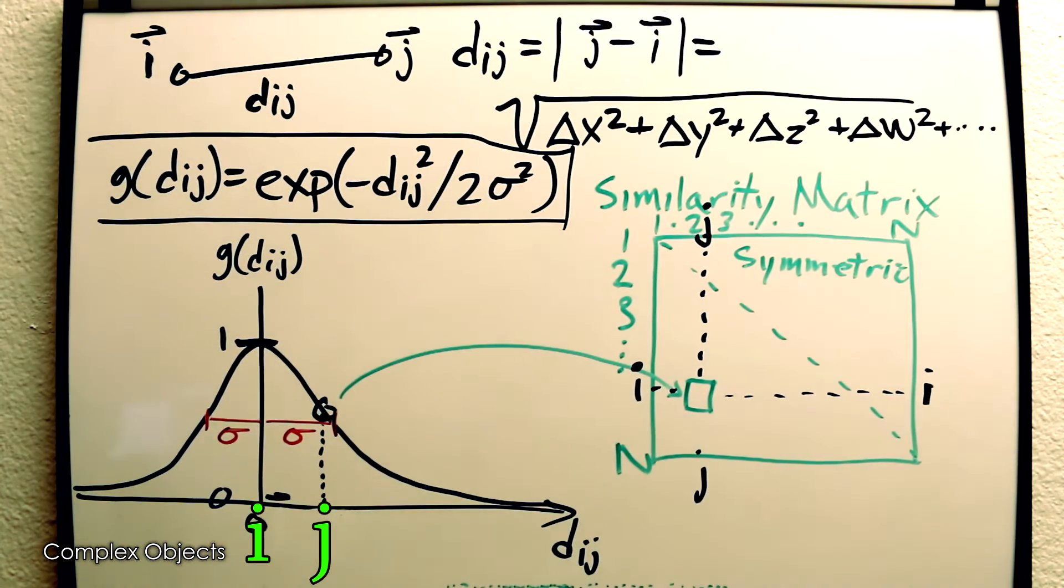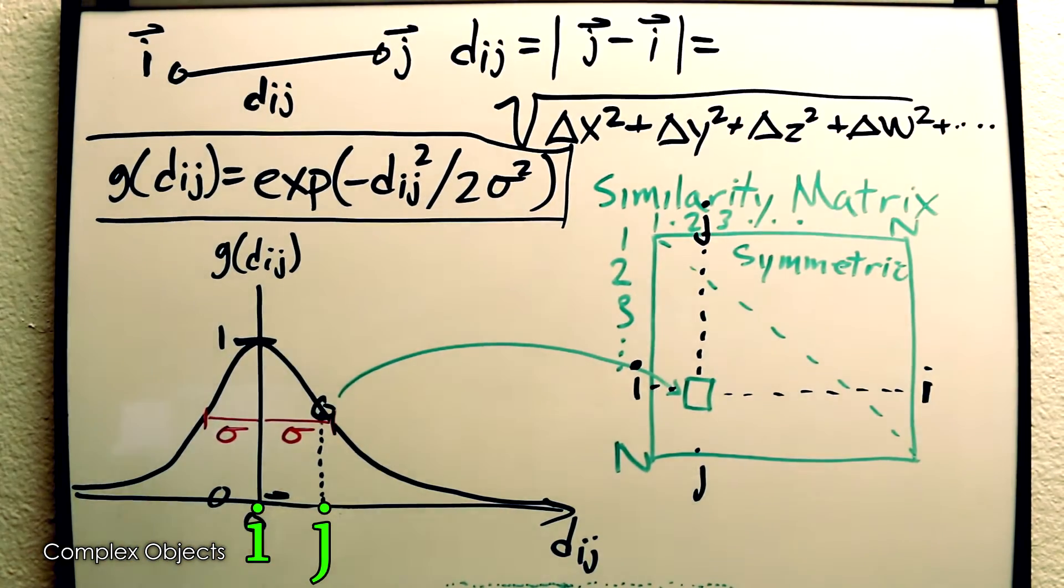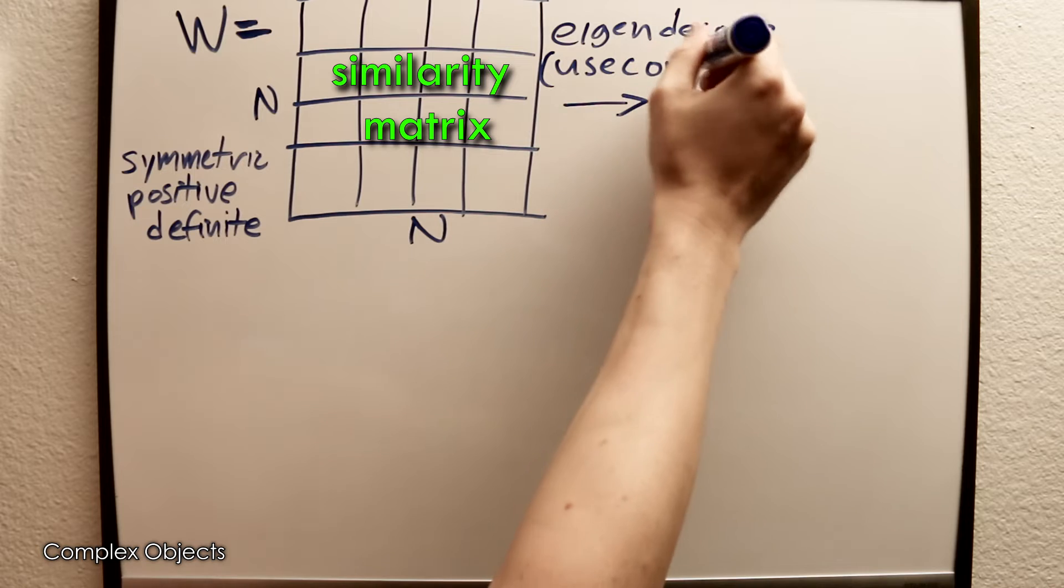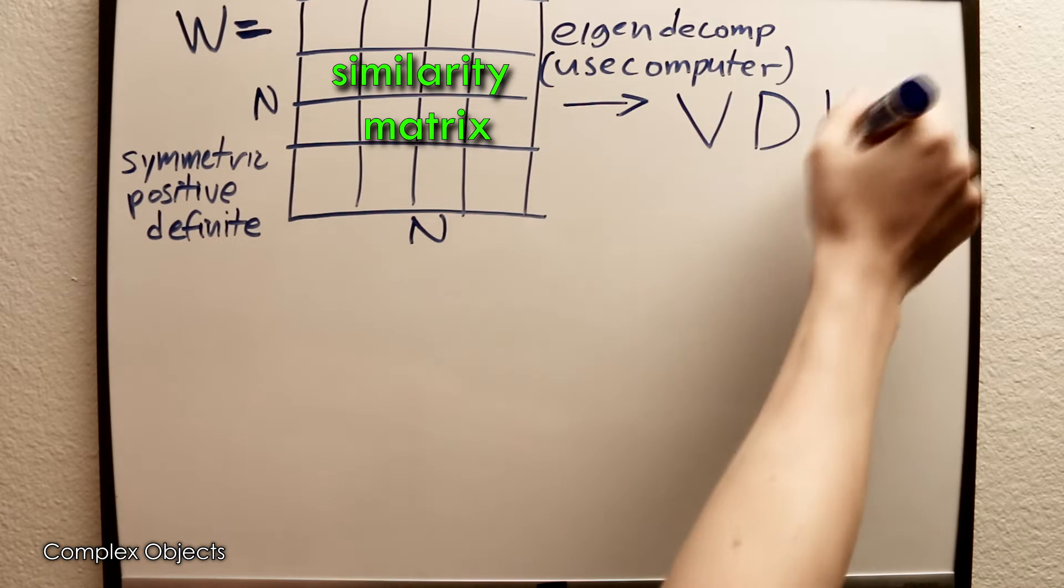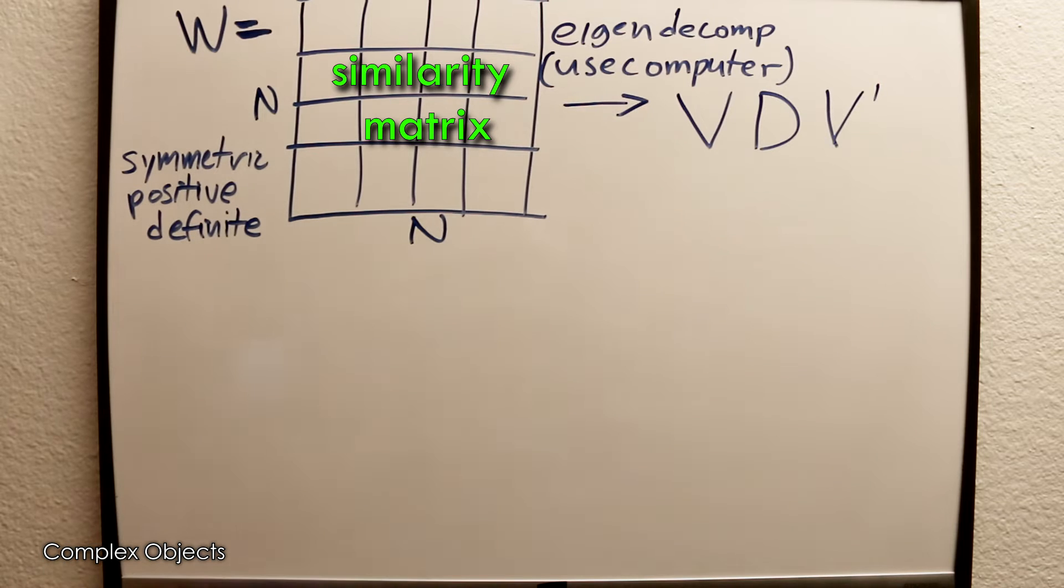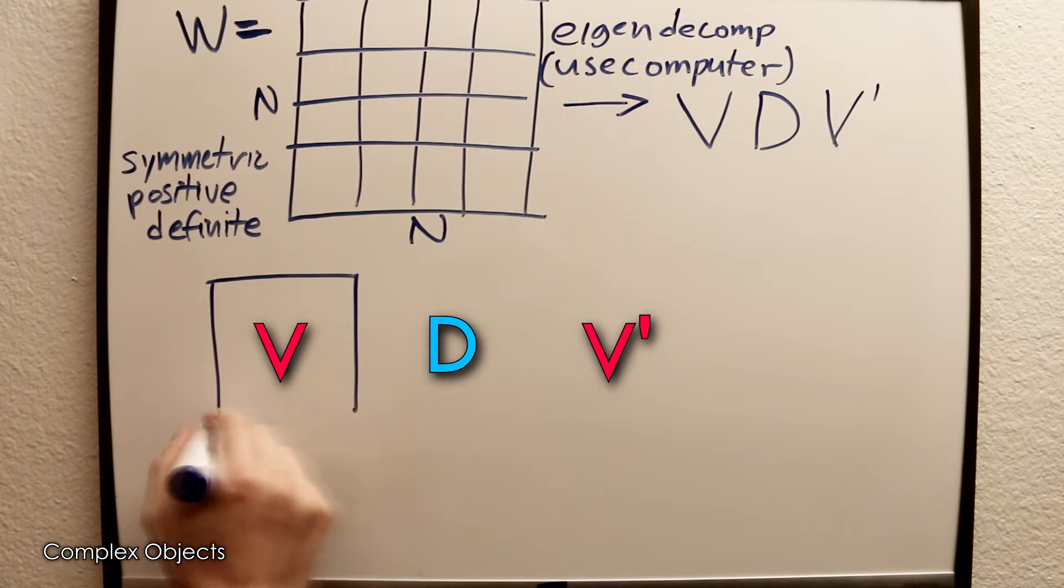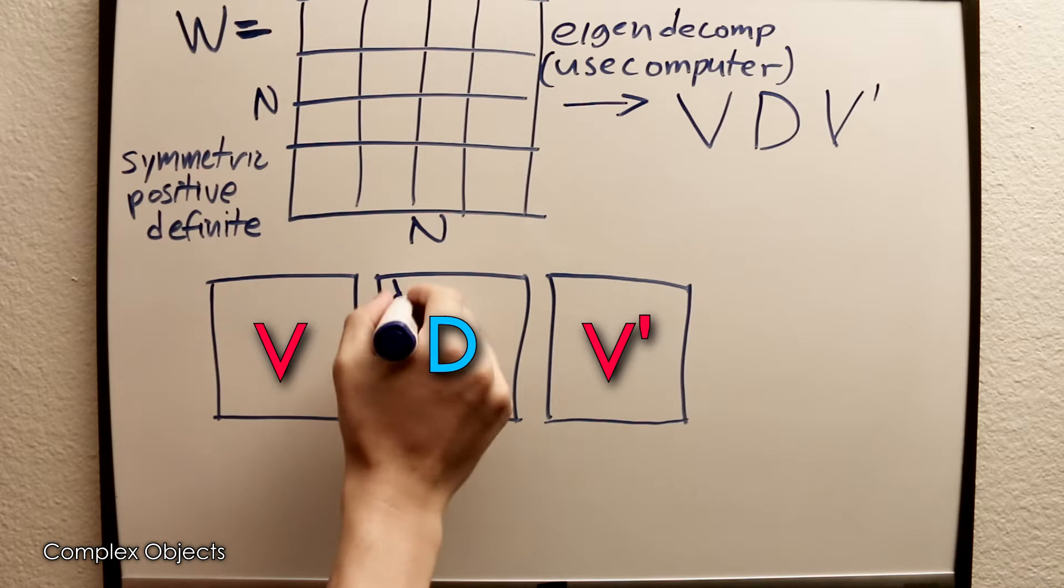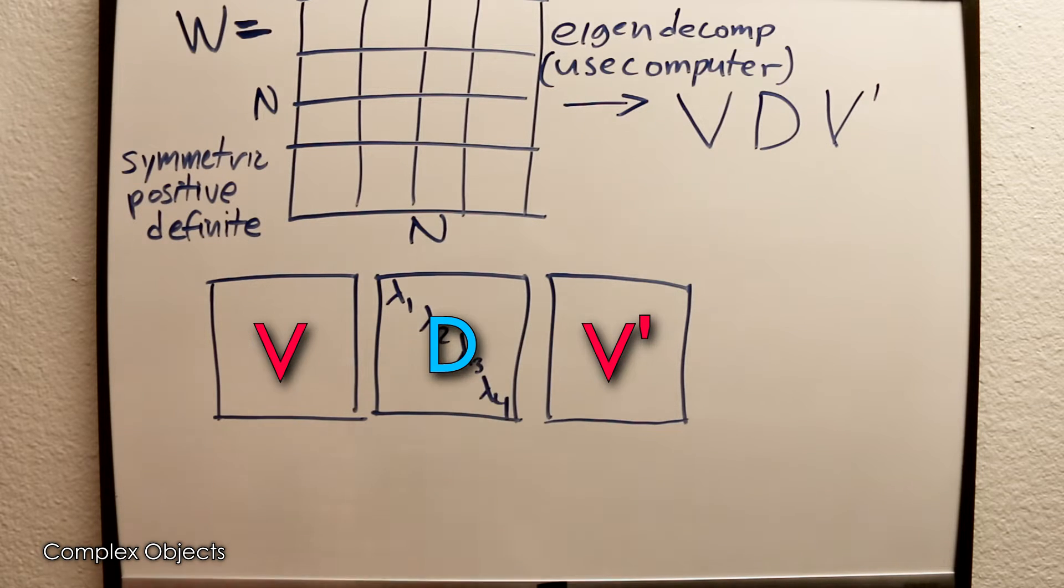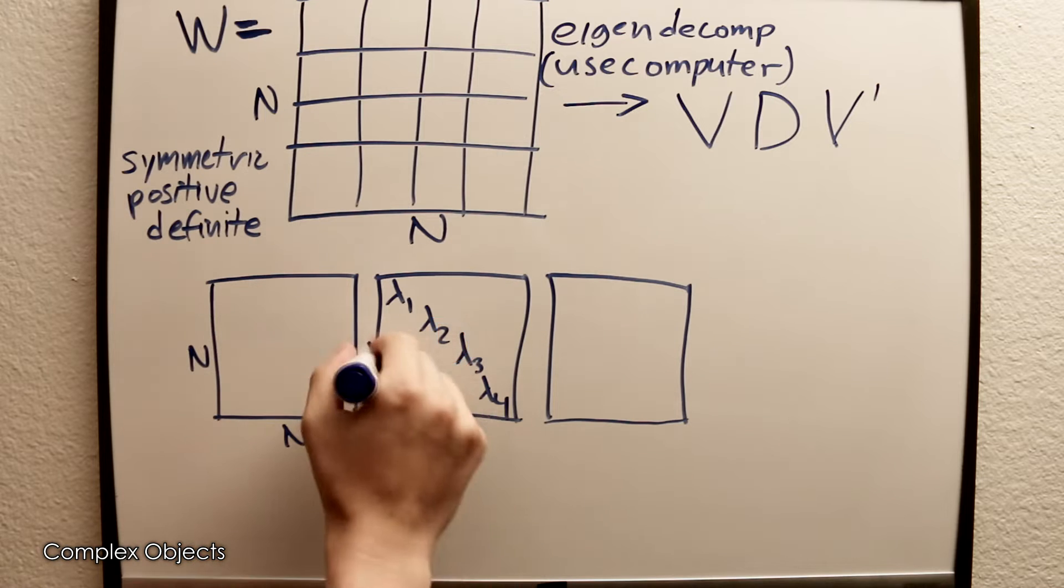You then compute an eigenvector decomposition of that similarity matrix, which you could call VDV transpose. If you have n data points, the similarity matrix will be n by n, and V and D will also be n by n.